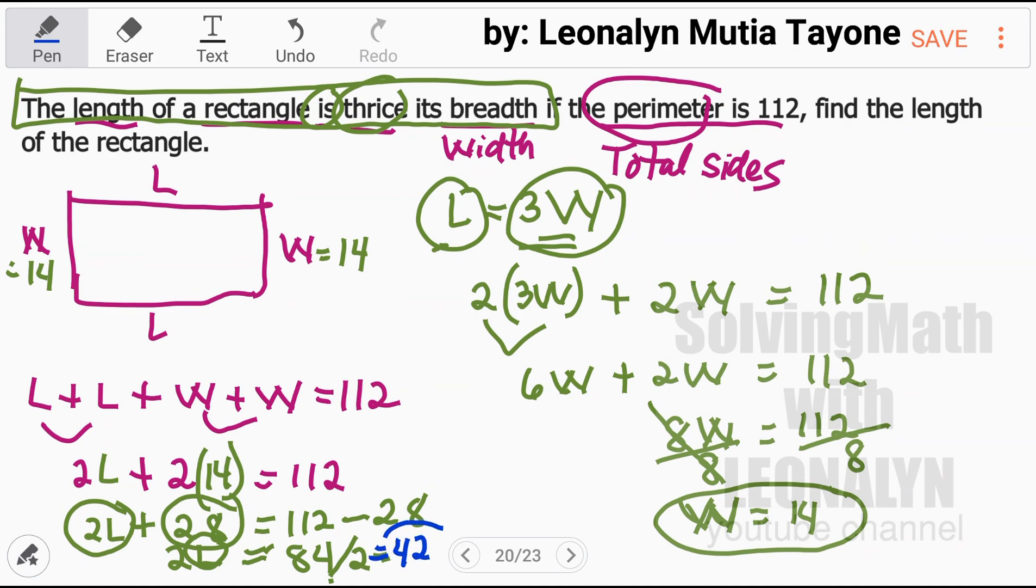So our length is 42. If we add them all, 42 plus 14 plus 42 plus 14, that equals 112. So therefore, for the question, find the length of the rectangle, 42.